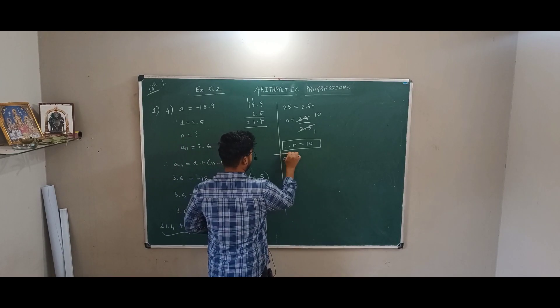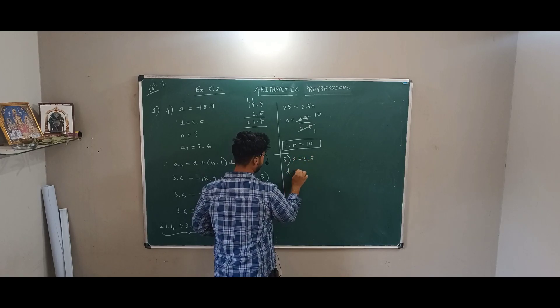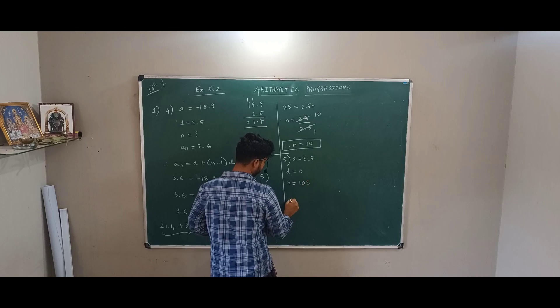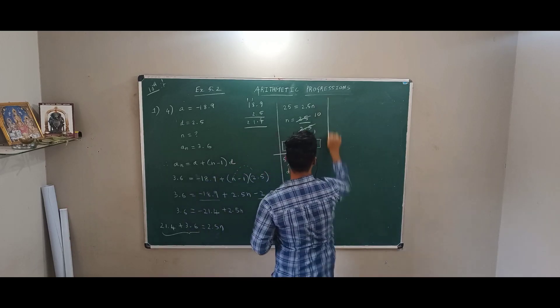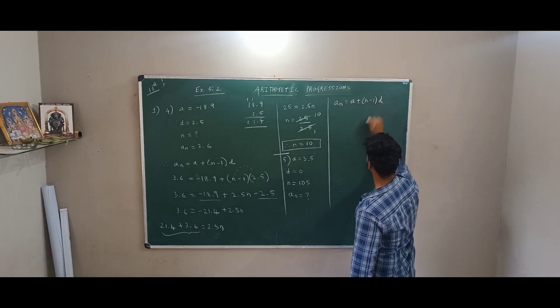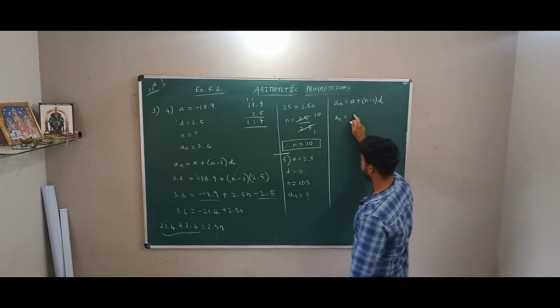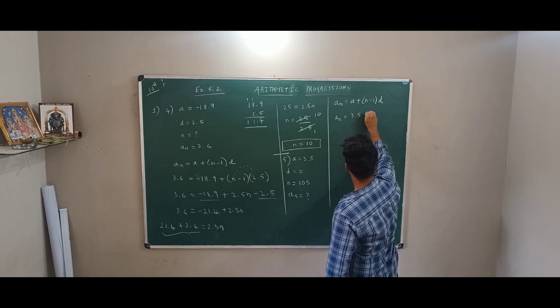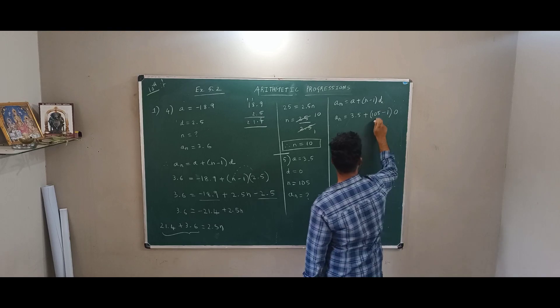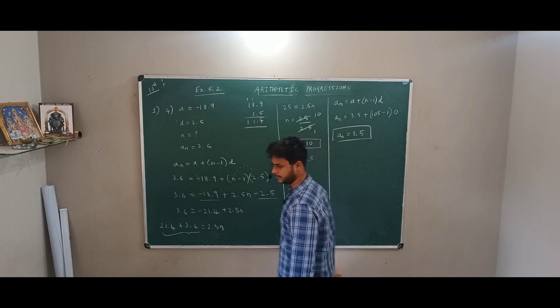Next, for fifth sum. A is equal to 3.5, 0, this is very easy, 1.05. A is equal to A plus N minus 1 into D. My A is, I don't know A only, so A as it is. A is equal to how much is A? 3.5 plus N, 105 minus 1, how much is my D? 0. So 105 minus 1, 104 into 0, zero. So answer is 3.5. Correct, thank you.